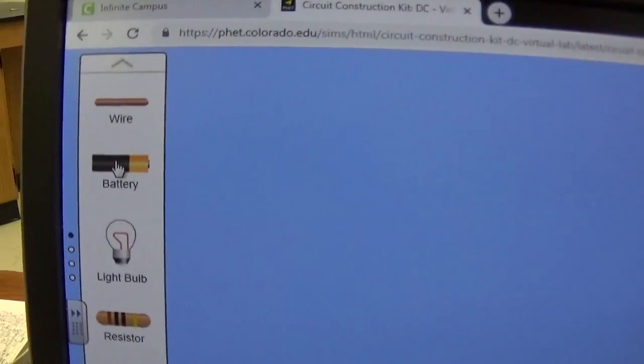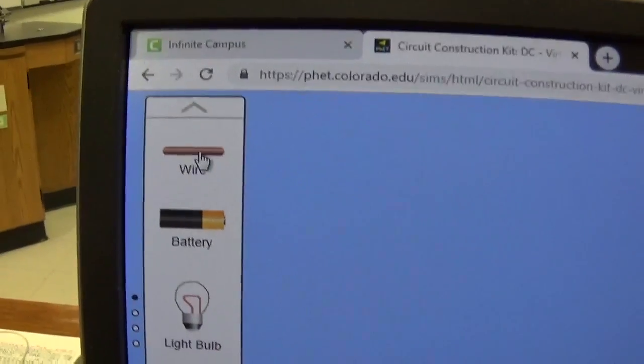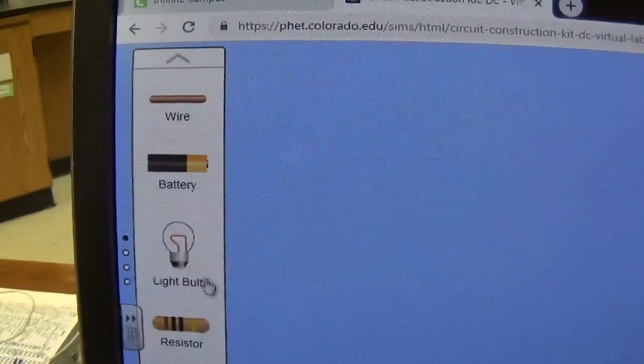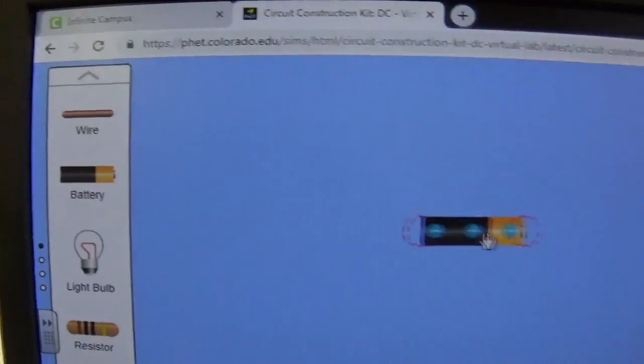So the first thing is if you guys want to use any of these items on the left-hand side, such as wire, battery, light bulb, resistors, and switches, you literally just take them and drag them right off the board over here and put them on the screen.